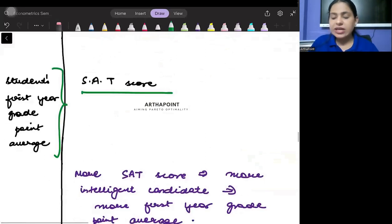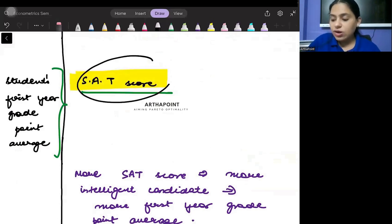SAT score in first year grade point average. So this is like an entrance exam. If you perform well in your MA economics entrance exam it will mean that automatically you may do well in the first sem of your masters.